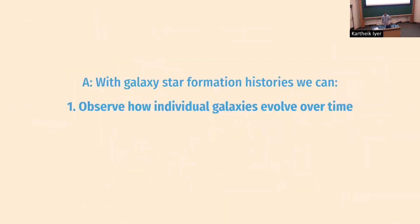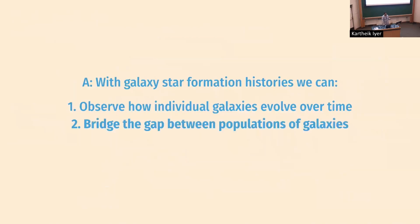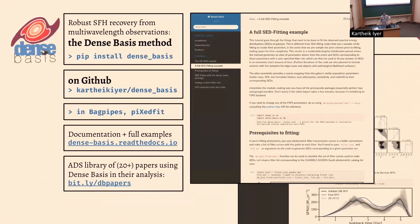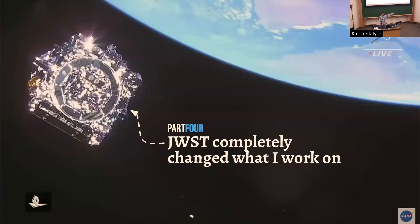With star formation histories, we can observe how individual galaxies evolve over time, bridge gaps between populations that exist at different epochs, and link observable phenomena to physical processes. I want to advertise the dense basis method that I develop and maintain — it takes multi-wavelength spectra of galaxies and tries to get at the star formation history as robustly as possible. It's public, coded in Python, available in other SED fitting codes, and fully documented. I was going more into simulations to figure out the physics, and then JWST launched and completely upended my plans — partly because part of my brain didn't want to believe it would actually happen, since it was so primed for failure in my head.